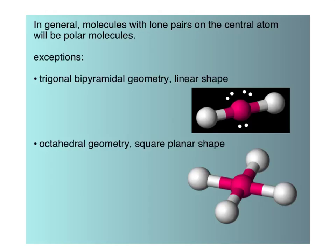So to generalize, we've seen molecules that have lone pairs on the central atom, and they most of the time will be polar. There are two exceptions. One that we saw in the last example with the xenon tetrafluoride, the octahedral geometry and the square planar shape. There would be an electron pair here and here.